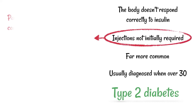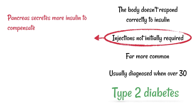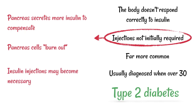Insulin injections are not initially required in Type 2 diabetes, but they can become necessary later. The pancreas secretes more insulin to compensate for the body not using it correctly, but eventually the pancreas cells can burn out. At that point, insulin injections become necessary because the pancreas is no longer doing its job.